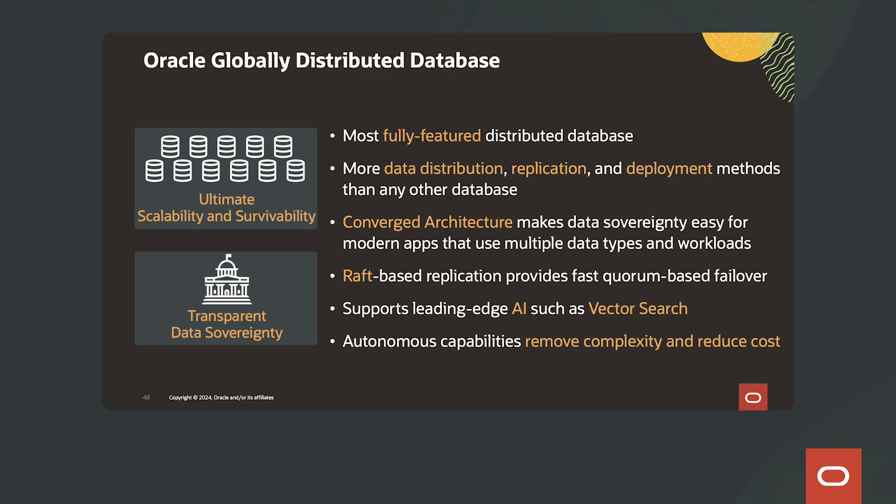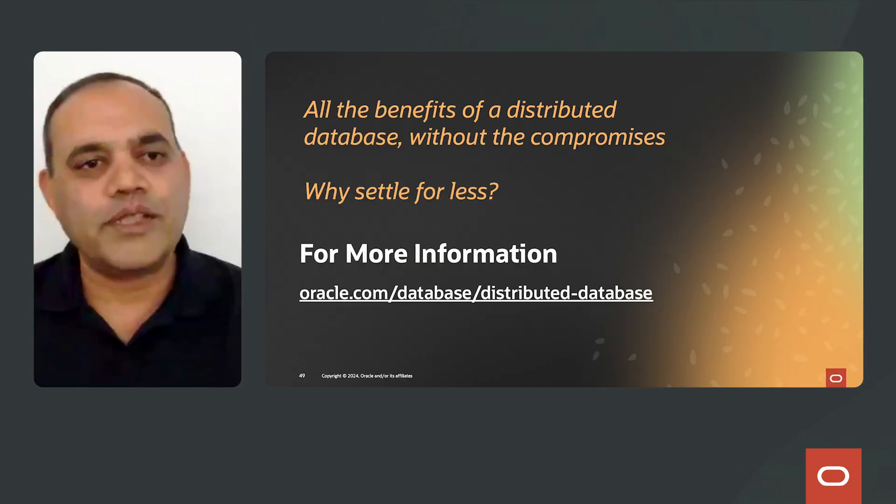Here are the key takeaways. Oracle's globally distributed database is the most fully featured distributed database, providing more data distribution, replication, and deployment methods than any other database. The converged database architecture makes data sovereignty easy for modern applications that use multiple data types and workloads. The new 23 AI raft-based replication provides fast quorum-based failover. It supports leading-edge AI such as vector search, and its autonomous capabilities remove complexity and reduce cost — providing all the benefits of a distributed database without the compromises.